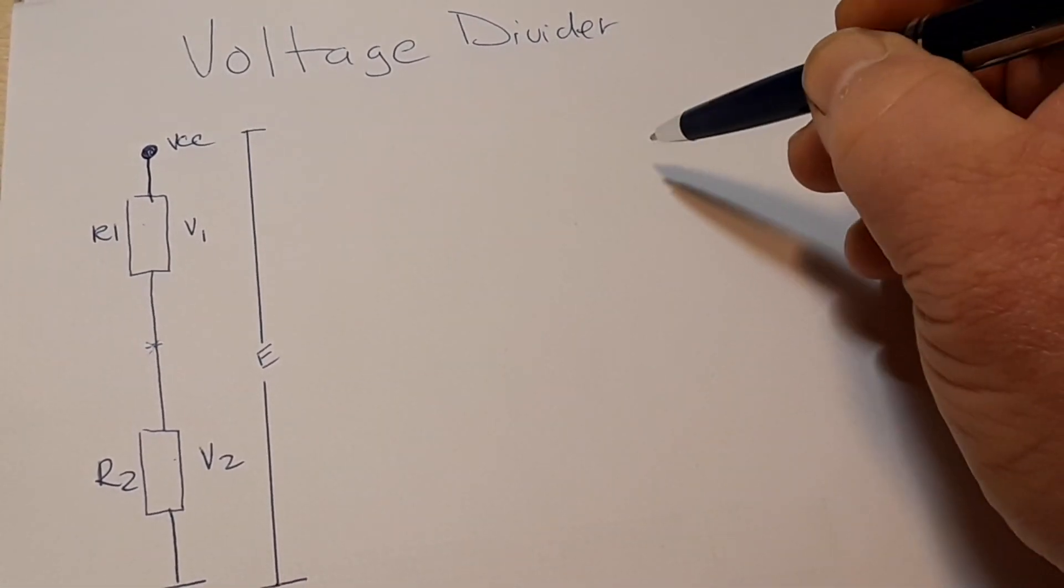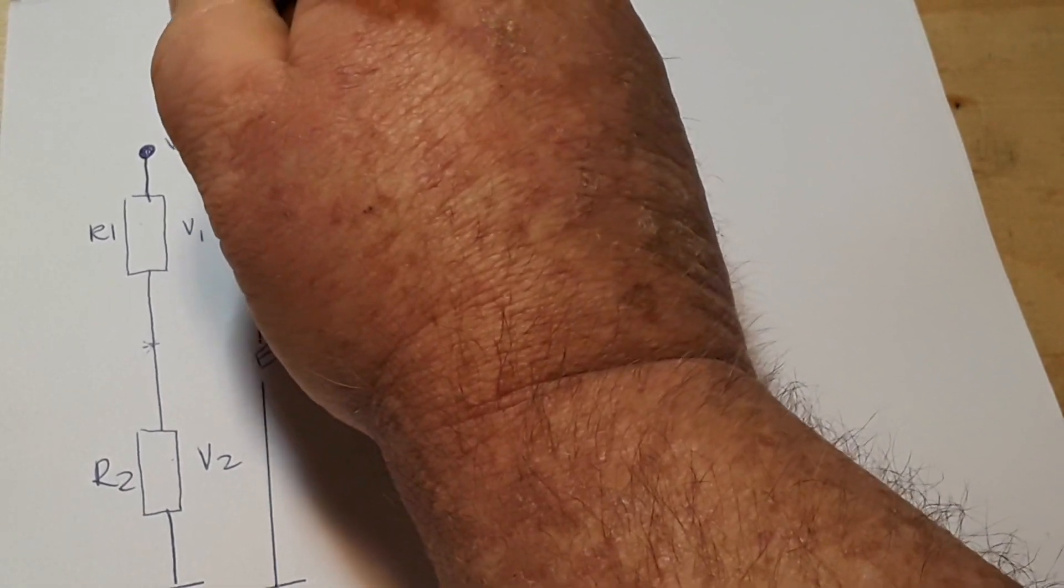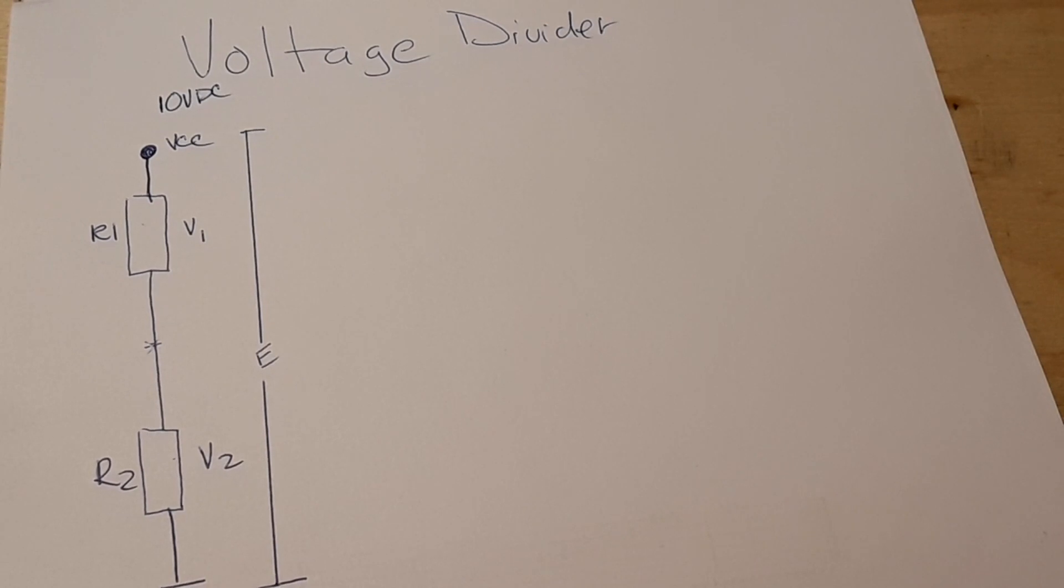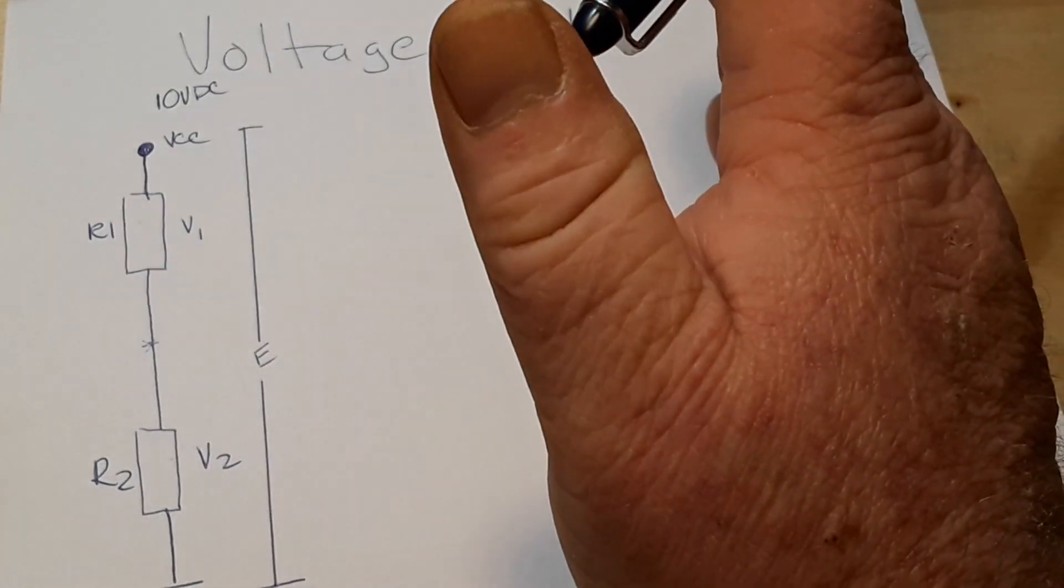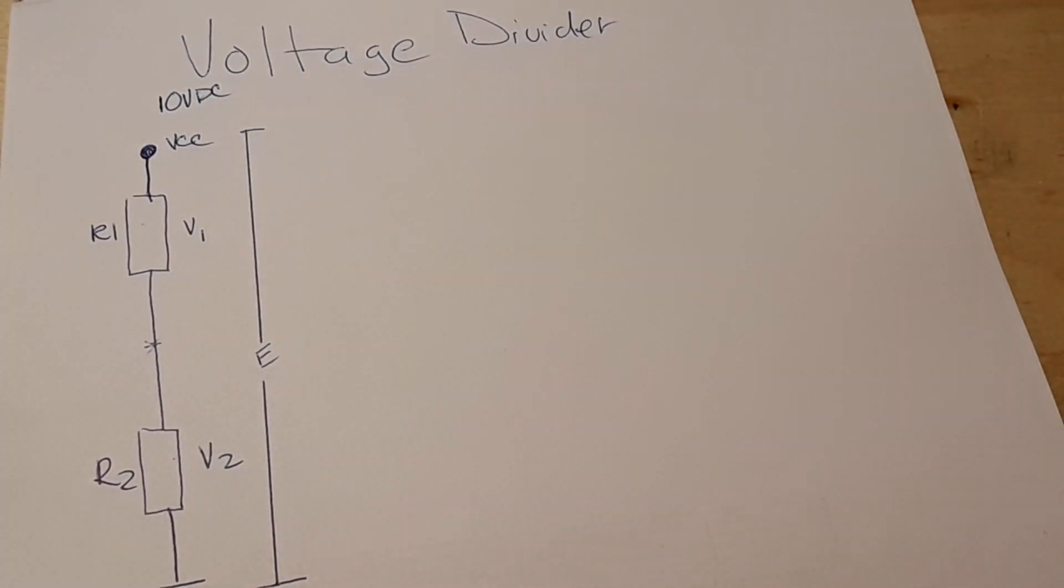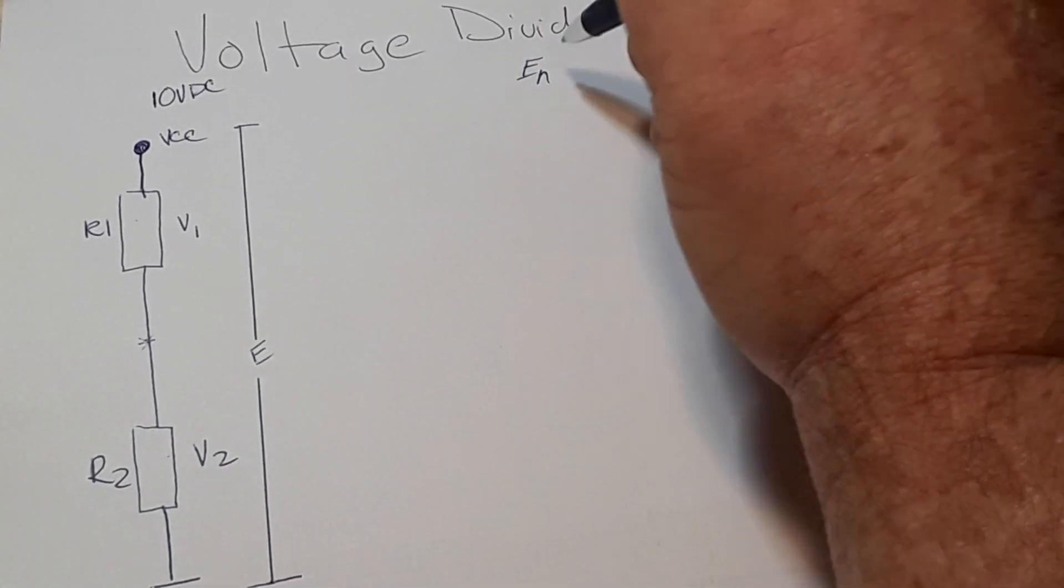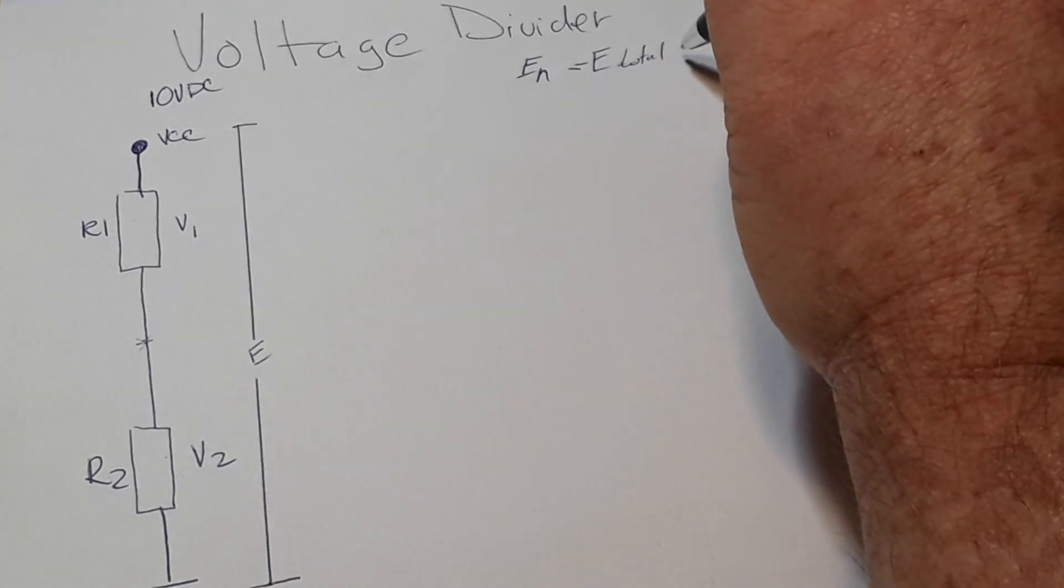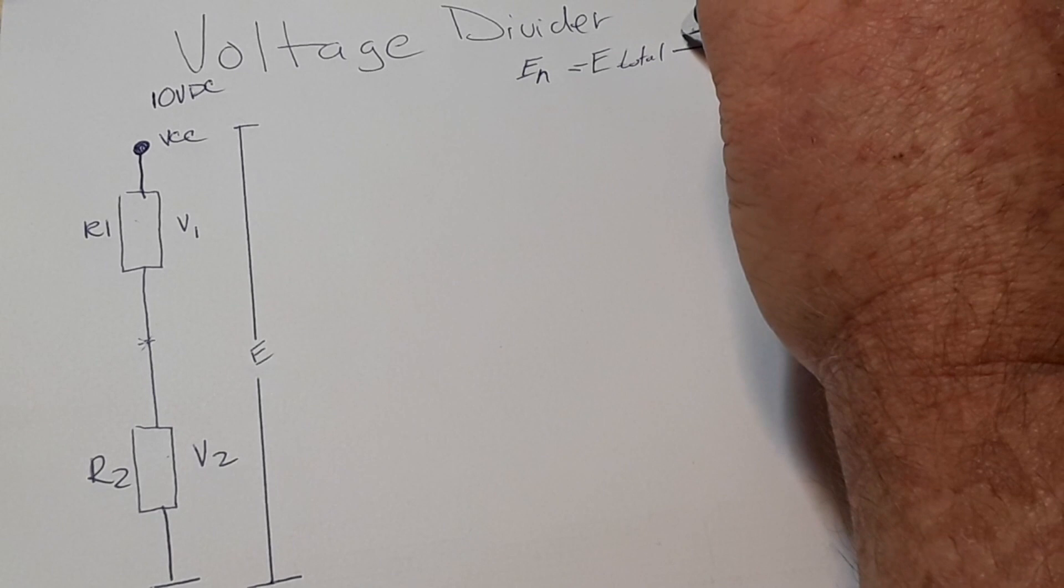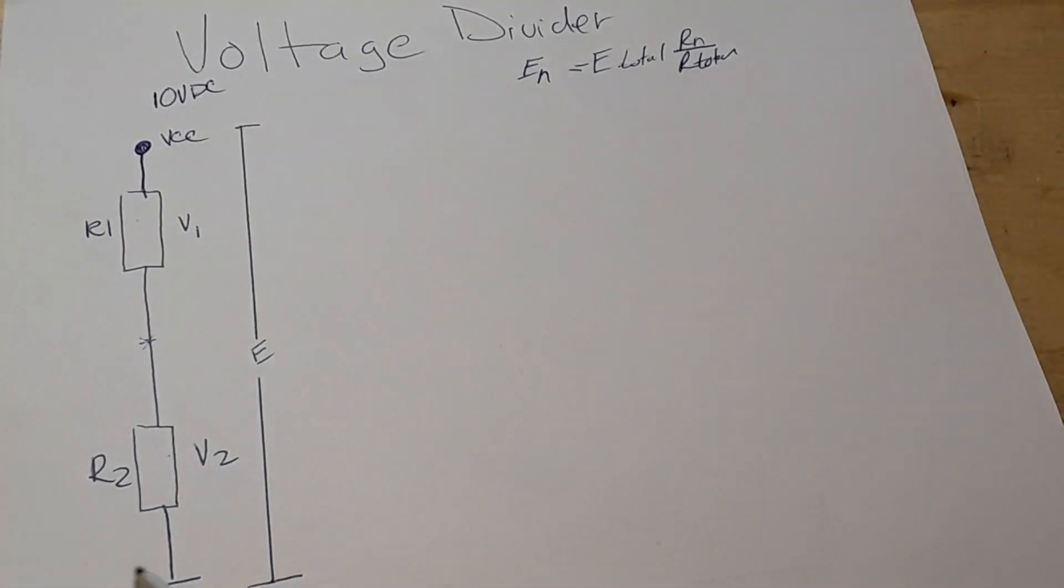So, now, let's say, what is our VCC? Well, let's say it is 10 volts DC. So, we need to know other values. Because what we know at this point right now is the basic voltage divider equation. So, that basic formula is E at N is equal to E total times resistor N over resistor total. So, that's your basic formula.